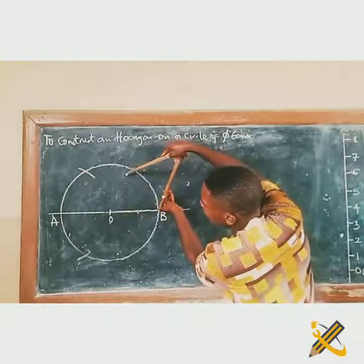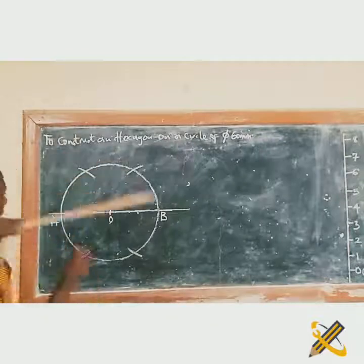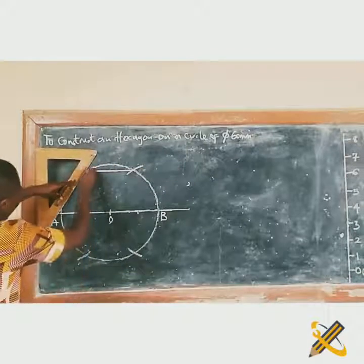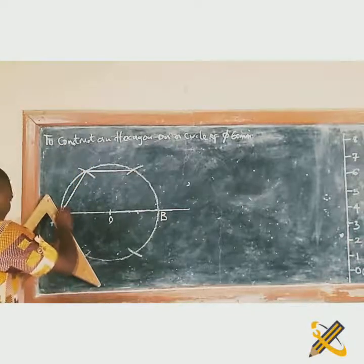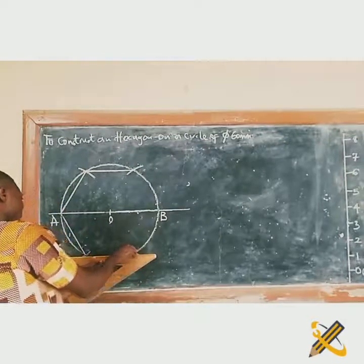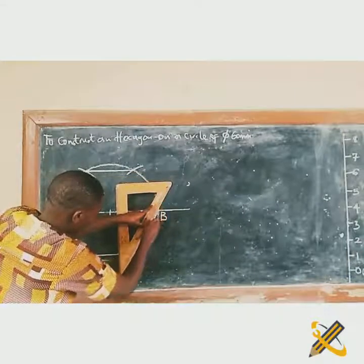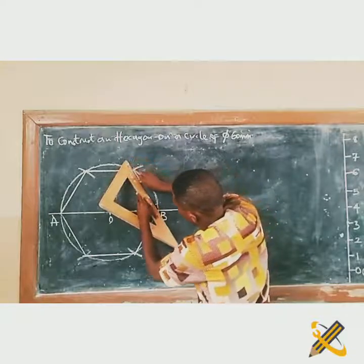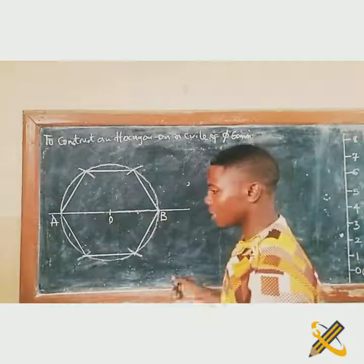From point B, I strike arcs towards the top and towards the bottom. Then from point A, the same. The next thing is to simply pick your ruler and join all the intersections together. Doing this for all six intersection areas gives us a hexagon — it is having 6 sides. That completes the hexagon construction using the circular method.